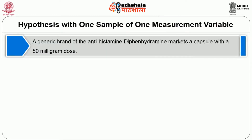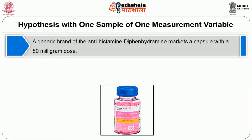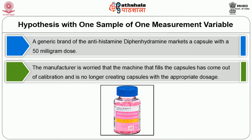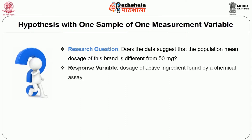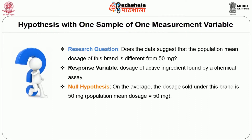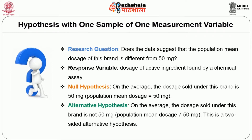Here are some examples. Hypothesis with one sample of one measurable variable: A generic brand of the antihistamine diphenhydramine markets a capsule with a 50 milligram dose. The manufacturer is worried that the machine that fills the capsule has come out of calibration and is no longer creating capsules with the appropriate dosage. The research question is: does the data suggest that the population mean dosage of this brand is different from 50 milligrams? The response variable is dosage of active ingredients found by a chemical assay. Null hypothesis: on the average, the dosage sold under this brand is 50 milligrams. Alternative hypothesis: on the average, the dosage sold under this brand is not 50 milligrams. This is a two-sided alternative hypothesis.